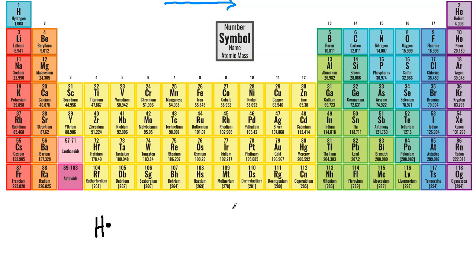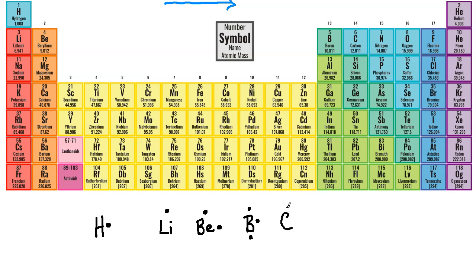Let's go from lithium across to neon. Lithium is in shell two, one element deep, so it has a single dot. Beryllium has two electrons — one dot on any side, then a second on a different side, not paired yet. Boron is three elements into shell two, so three dots. Carbon is four elements in, giving us four dots — one on each of the four sides.